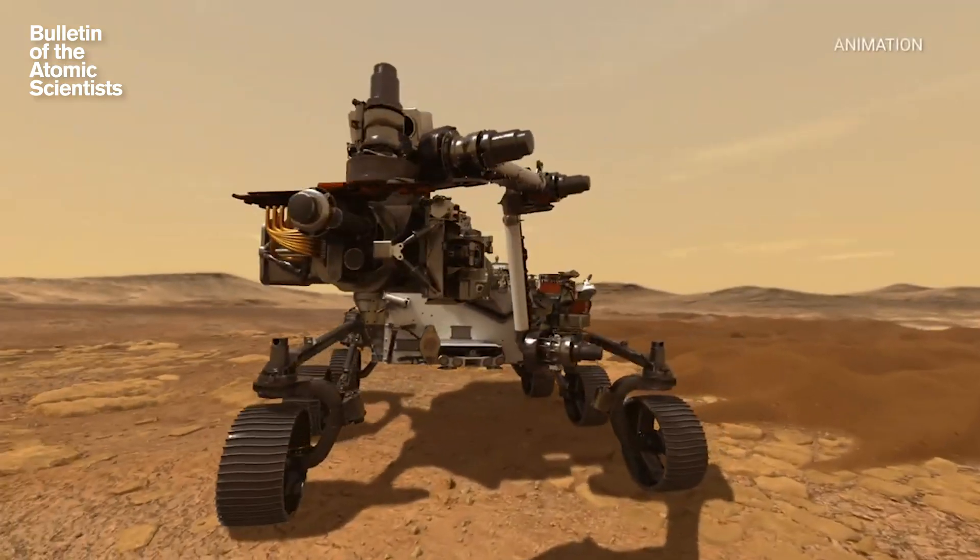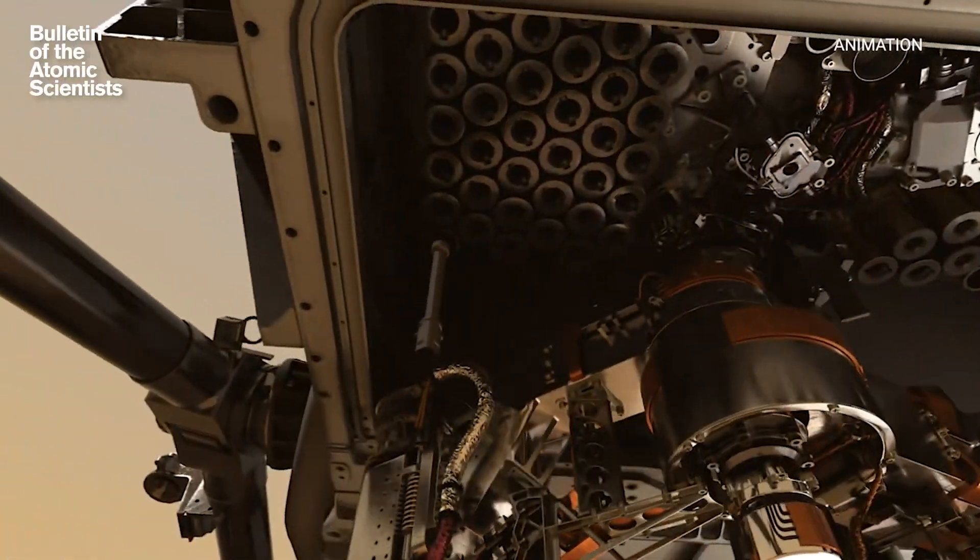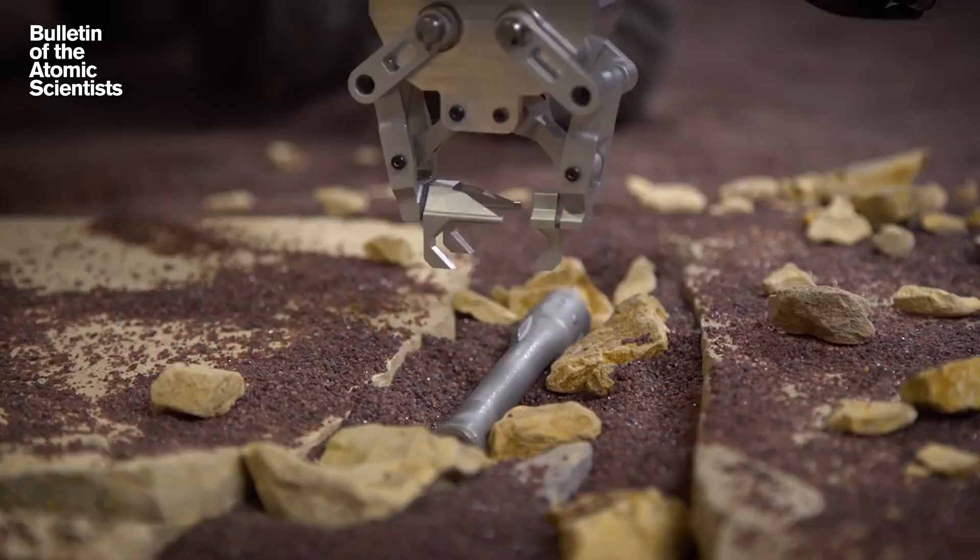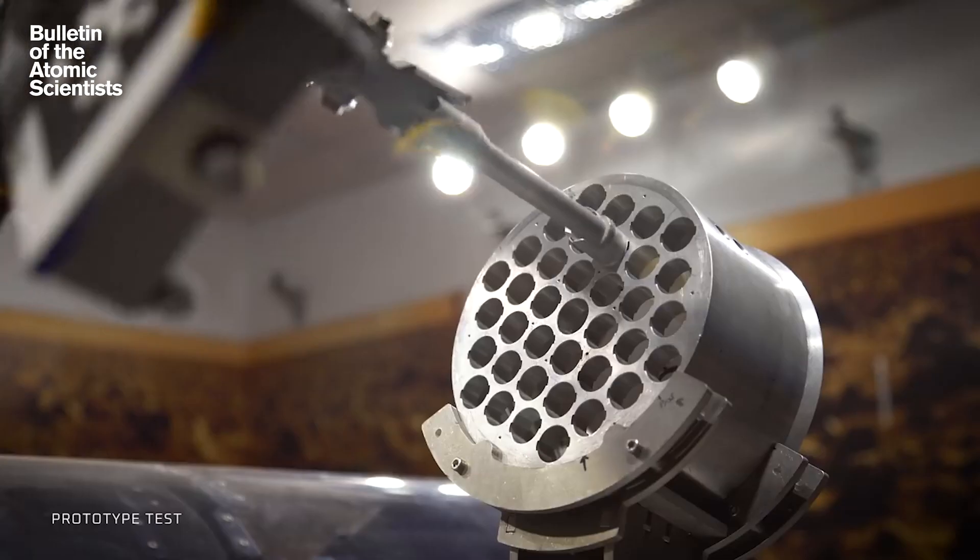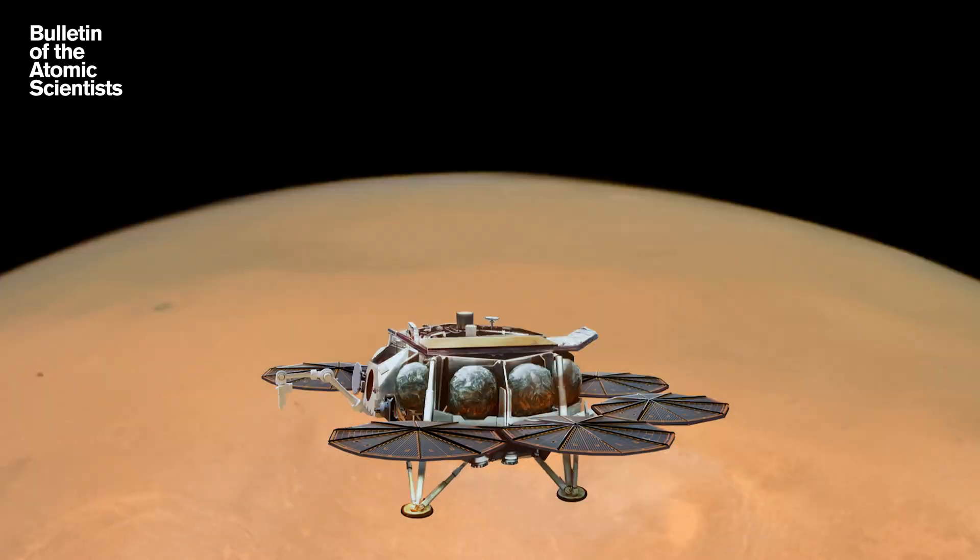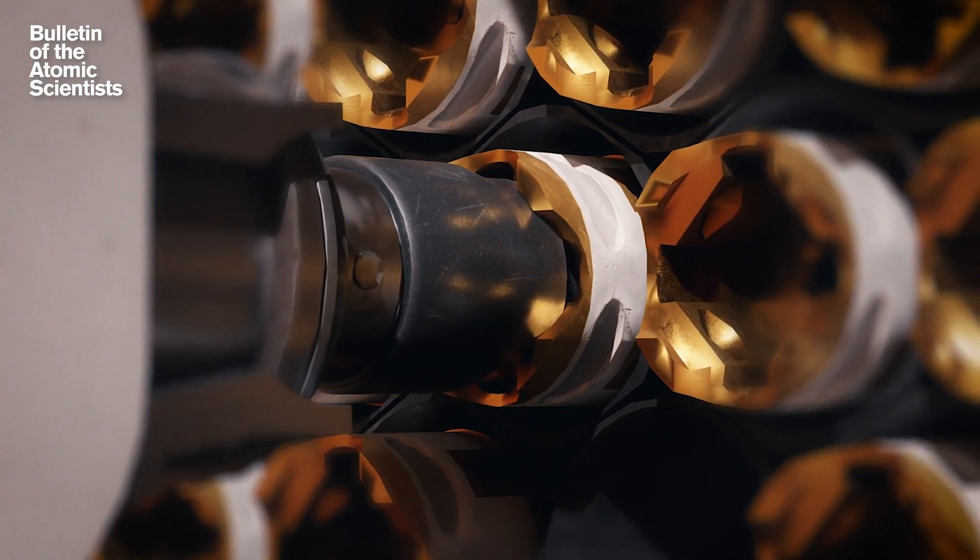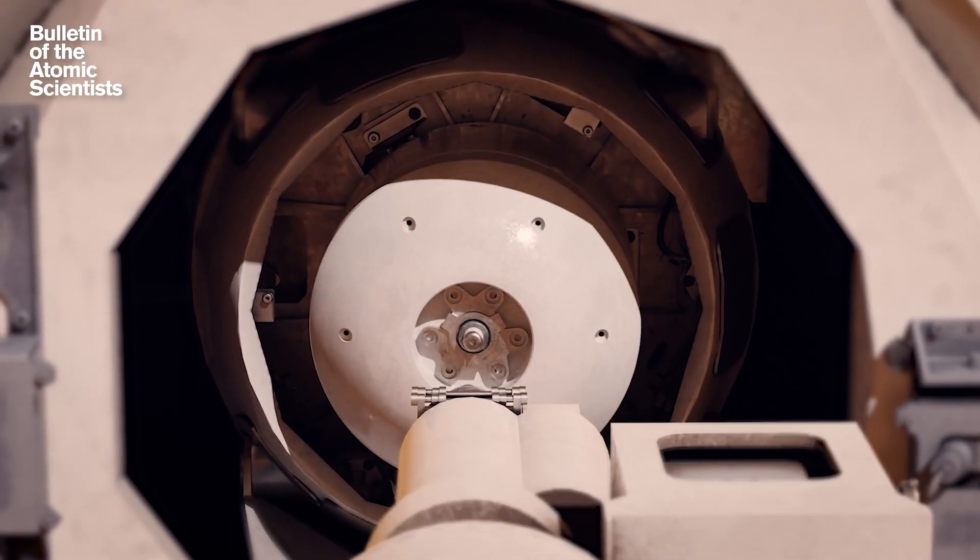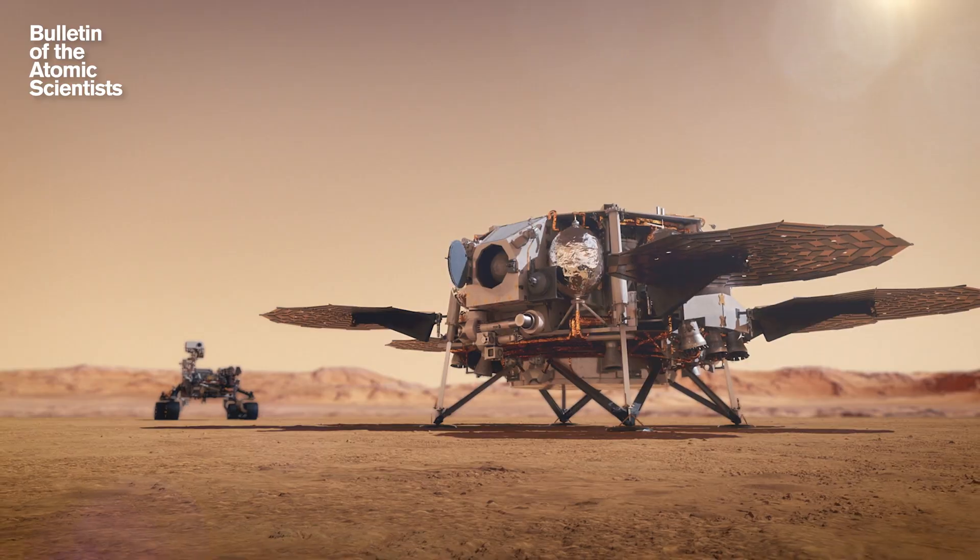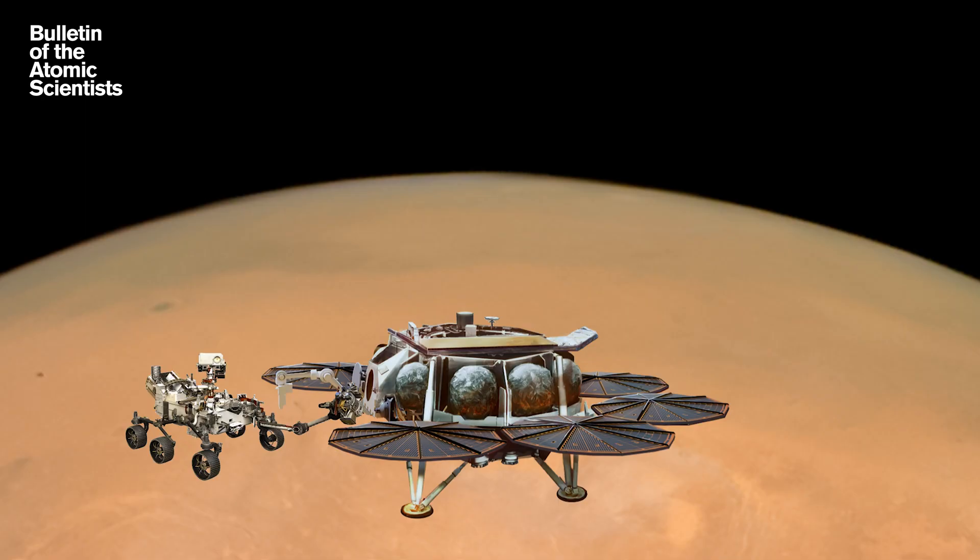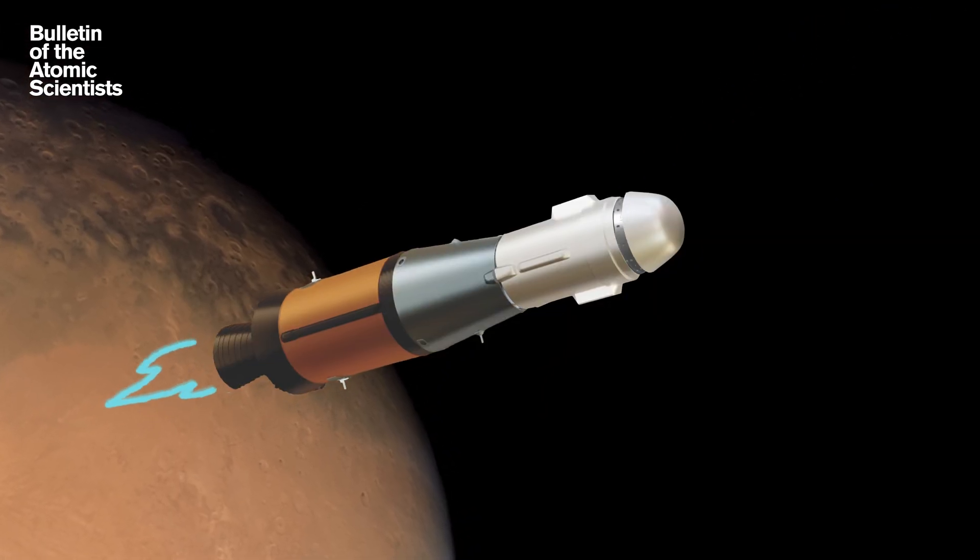Doing that involves the most complicated robotic space mission ever. First, Perseverance places its sample tubes into a sample container inside of the sample retrieval lander, which should arrive on Mars around 2030. With the samples moved from Perseverance to the container, the lander moves the container into a rocket called the Mars Ascent Vehicle, or MAV. Then it literally throws the MAV into the Martian air before it fires its rockets and heads back into space.